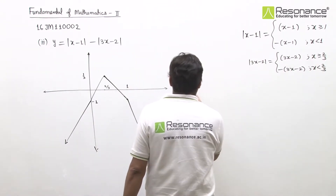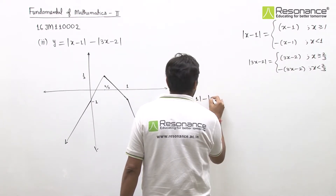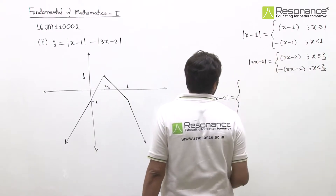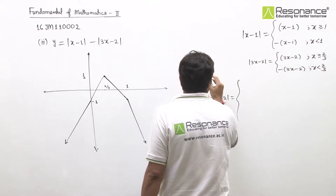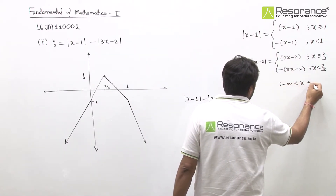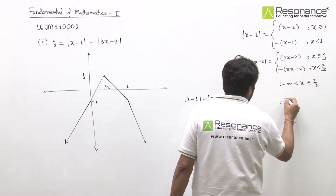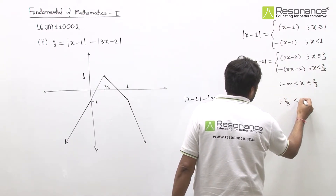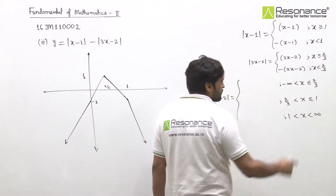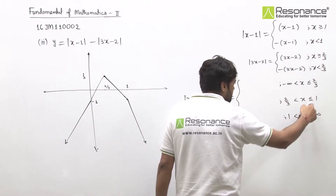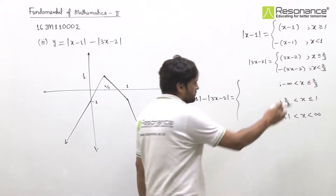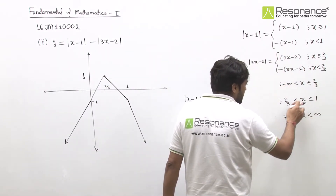Combining both, the changing points are 1 and 2/3. We can place the equal-to sign at either turning point. We break the domain at x = 2/3 and x = 1. For x less than 2/3, both terms are negative — so we open both with minus. There's a minus sign before the second modulus, so it becomes minus plus for the second term.